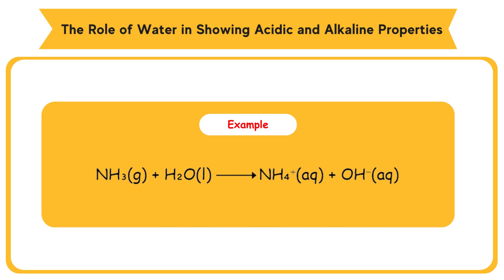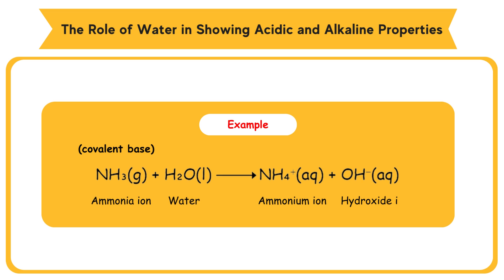Example: ammonia, NH3, is a covalent base. When ammonia gas, NH3, dissolves in water, H2O, it reacts with water to produce ammonium ion, NH4+, and hydroxide ions, OH⁻. Notice that the ammonia NH3 molecule has accepted a proton, H+, from water to form the ammonium ion, NH4+.